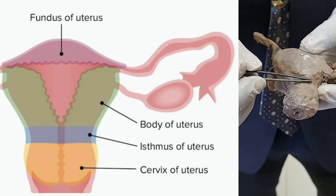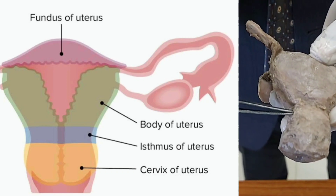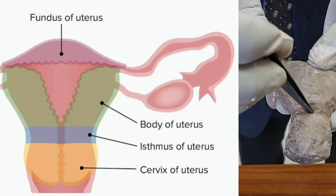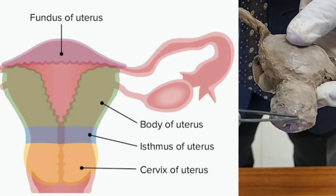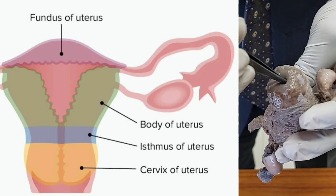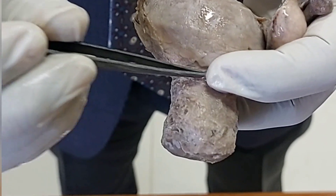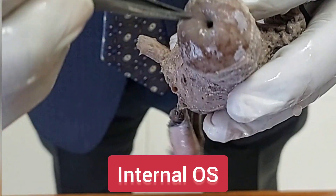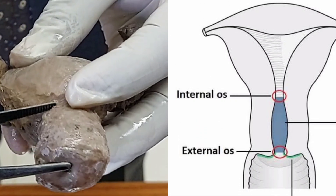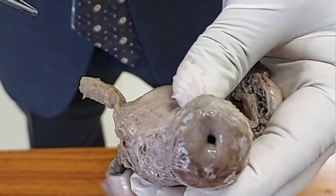Here is a constriction — you can see this constriction, it is called the isthmus. Inside at the level of the isthmus you will get one orifice called the internal os. Below that is the cervix; the total length of the cervix is about 2.5 centimeters or one inch. Here is another opening called the external os. So the internal os is at the level of the isthmus, and in between the internal os and external os is the cervix.